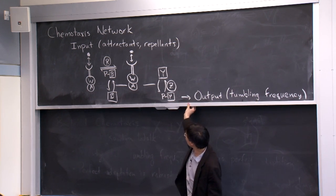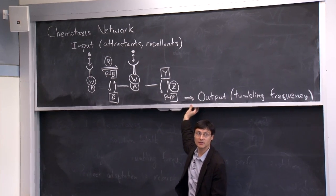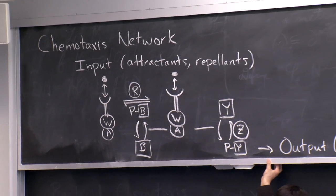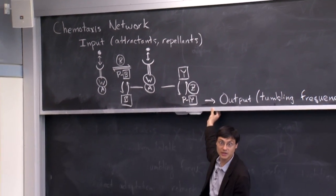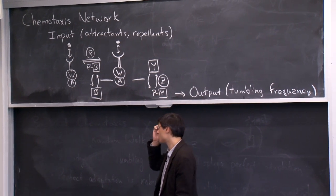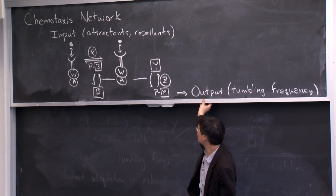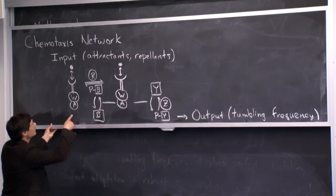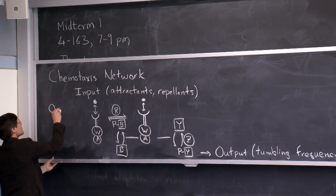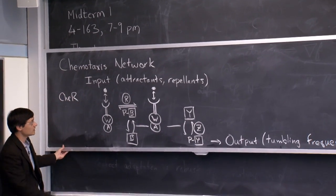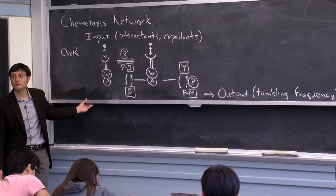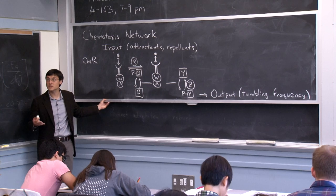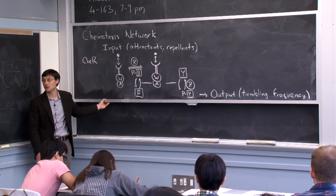This is a real case where models made clear predictions that drove new measurements. All the letters in the network — CheW, CheA, CheR, CheB, CheY, CheZ — are real protein names in the E. coli chemotaxis network, identified by genetics: researchers looking for mutants defective in chemotaxis. CheR corresponds to the methyltransferase, and these proteins are identified as che (chemotaxis) followed by a letter.